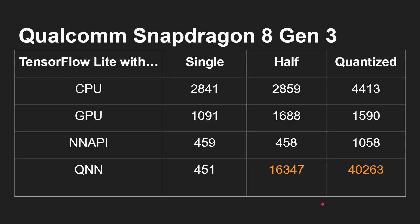Looking at a Snapdragon 8 Gen 3: CPU scores look familiar — single and half are similar, better with quantized. If you use the GPU, scores go down across the board. If you use the NNAPI — which should be the way all neural networks are run on Android — they're even worse. But using Qualcomm's SDK, for single precision the numbers are much worse, while for half precision and quantized there's a huge difference in performance — a massive uplift.